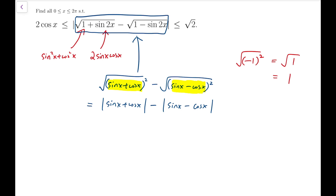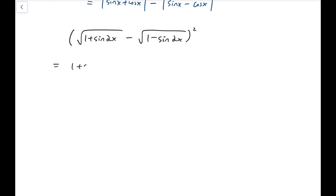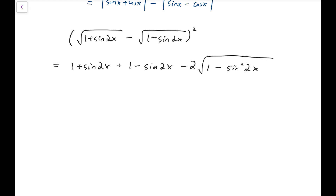So I had to look for an unusual approach. What I chose was to consider the square of the middle expression instead. If I square the whole middle expression, I get two terms that do not contain square roots, minus 2 times √(1 - sin²2x). Simplifying, I get 2 minus 2√(cos²2x), which equals 2 minus 2|cos 2x|.